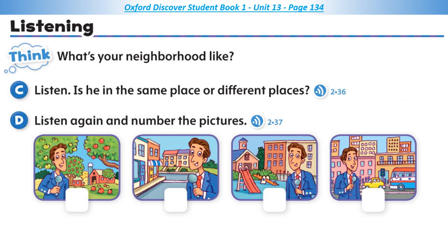Listen. Is he in the same place or different places? One: I'm here in King City. Look at all the cars and buses on the streets. I'm in front of a tall apartment building. It's very noisy here and there are a lot of people and buildings. Many people live in the city. It's very interesting here. Two: People live here and children go to school near their homes. This neighborhood is small but there's a park, a school, and lots of houses. This is a very safe place to live.